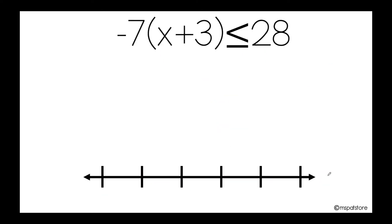On this type of exercise, you need to use the distributive property, which means you're going to multiply the number that is right outside the parentheses by each one of the terms inside the parentheses.